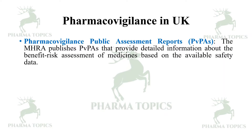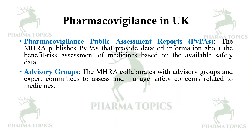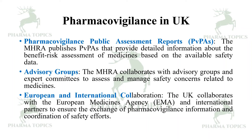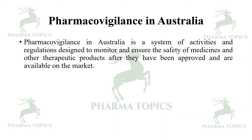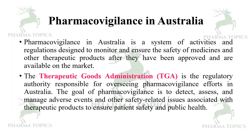The MHRA publishes Pharmacovigilance Public Assessment Reports (PvPARs), which provide detailed information about the benefit-risk assessment of medicines based on available safety data. Similar to the US, the MHRA collaborates with advisory groups and expert committees to manage safety concerns related to medicines. The UK also collaborates with the EMA and international partners to ensure the exchange of pharmacovigilance information and coordination of safety efforts. In Australia, the Therapeutic Goods Administration (TGA) is the regulatory authority responsible for overseeing pharmacovigilance efforts, with the goal of detecting, assessing, and managing adverse events and other safety-related issues associated with medications.